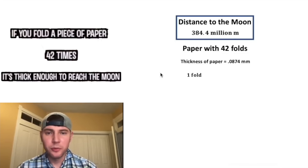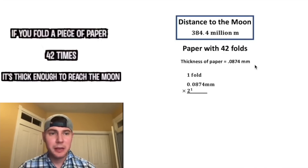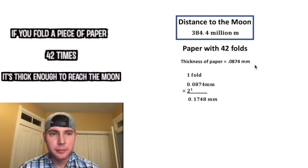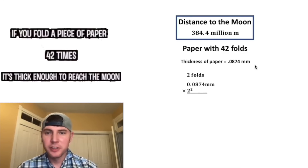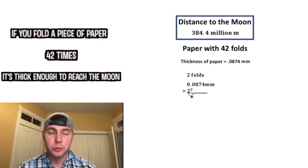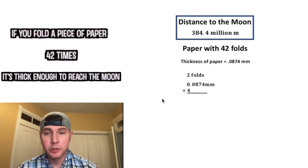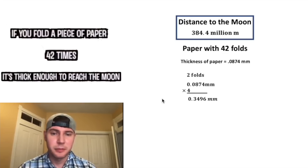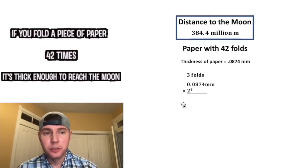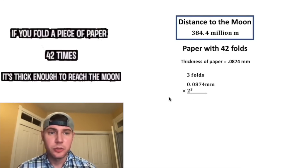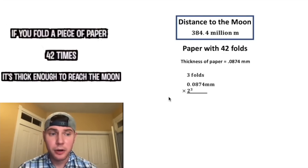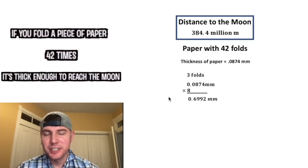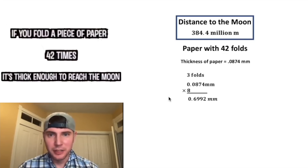Now let's look at one fold. We would take the thickness of our piece of paper, multiply it by 2 to the 1, and we would get 0.1748 millimeters. Or if we did two folds, we would multiply it by 2 squared, which would be 4, and that would give us 0.3496 millimeters. And three folds would be equal to this multiplied by 2 to the third power, which is equal to 8, and that gives us 0.6992 millimeters.